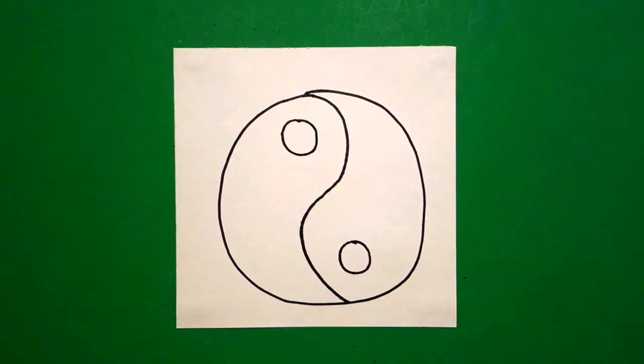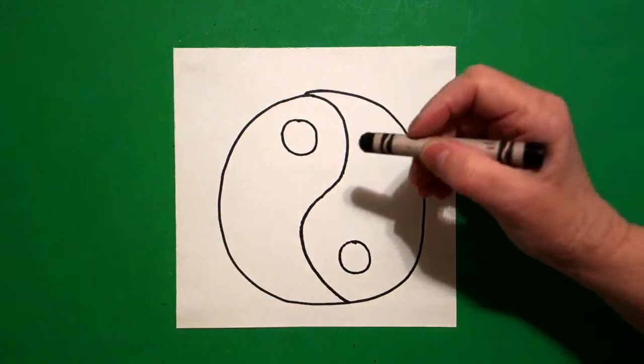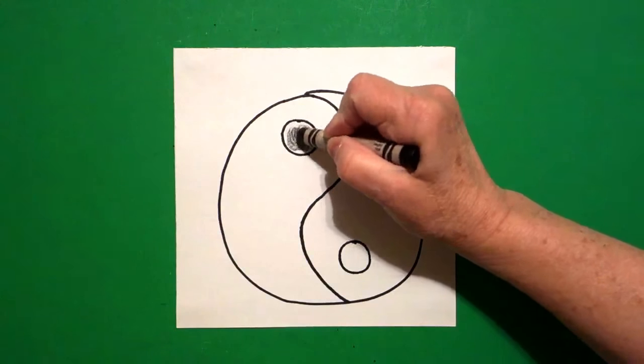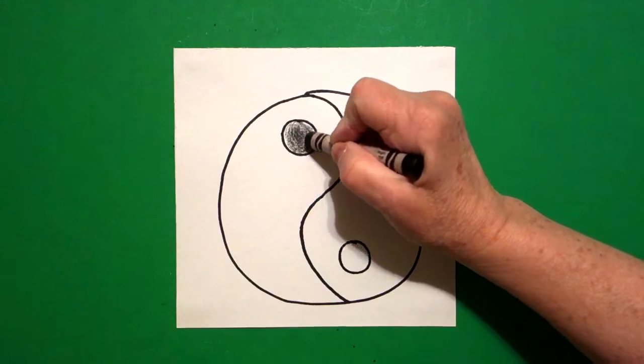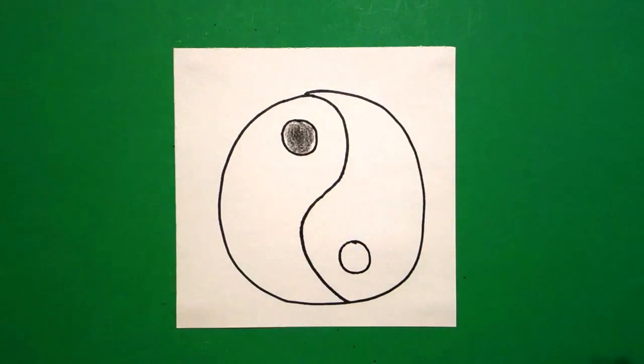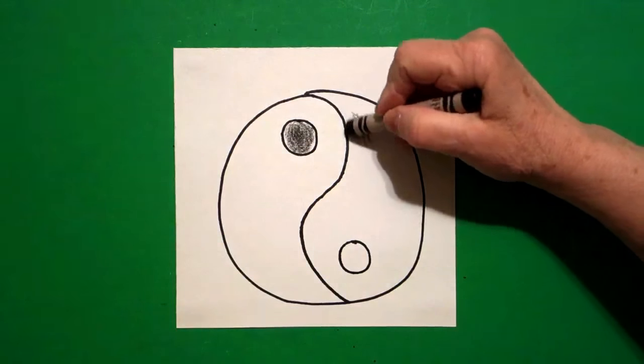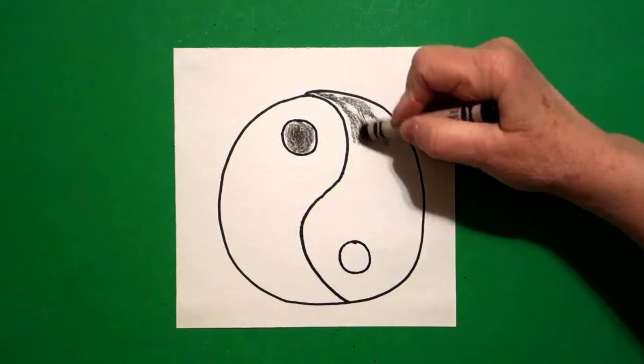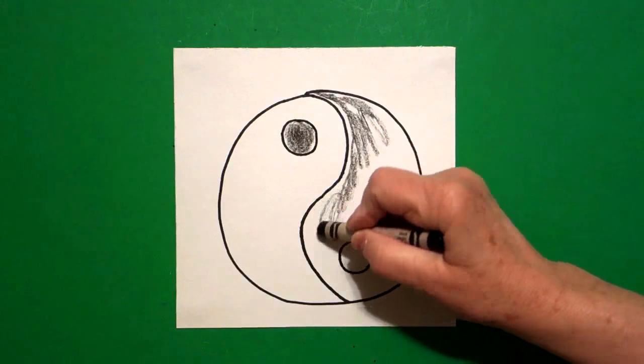Okay, you could color this in with black marker, but it looks just as well with black crayon. So with my black crayon, I'm going to color in this baby circle up at the top, and then I'm going to color this section of the symbol black on the right-hand side.